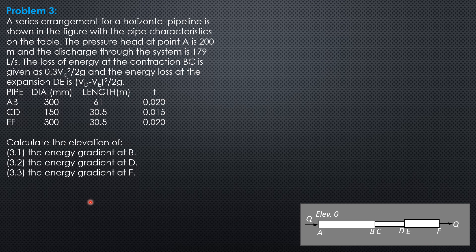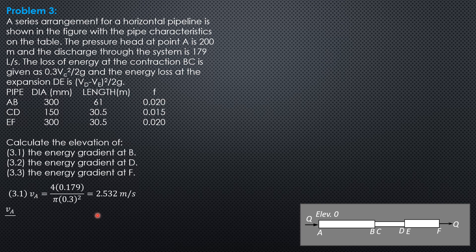First, let's compute the velocity at A, which is the same as at B, E, and F, because these pipes have the same diameter, so they have the same velocity and velocity head, except for pipes C and D. Velocity at A is 4 times discharge over pi times diameter squared, giving 2.532 meters per second. The velocity head at A equals V_A squared over 2g, which equals V_E squared over 2g and V_F squared over 2g = 0.3268 meters.